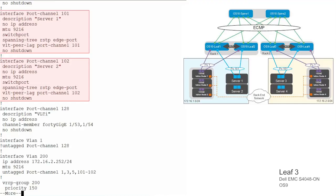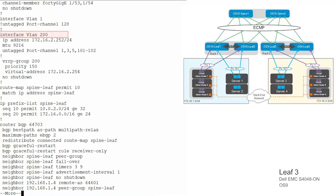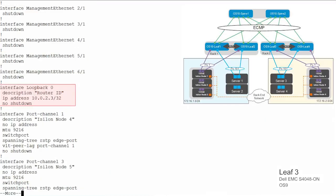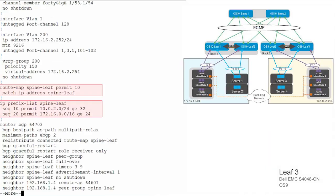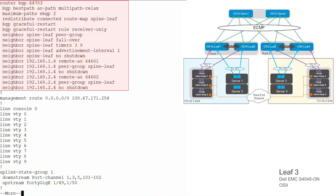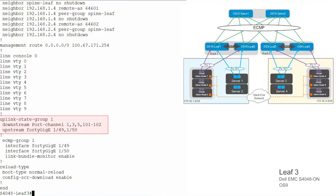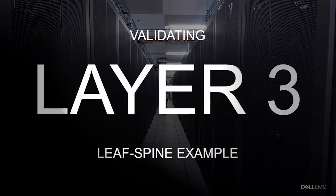Define the port as an edge port and ensure that the VLT peer lag port channel command is issued. Configure VLAN 200 and add the port channels. Configure VRRP to provide a secondary form of redundancy. Create a loopback interface to be used as the router ID and assign an IP address. Configure a route map and IP prefix list to redistribute all loopback addresses and leaf networks via BGP. Configure eBGP and define the neighbors. Configure UFD and assign port channels and ports 49 and 50. Configure the ECMP group and add ports 49 and 50.